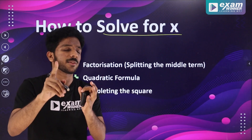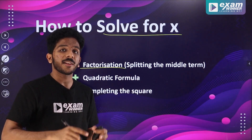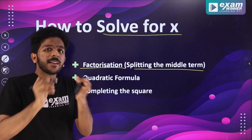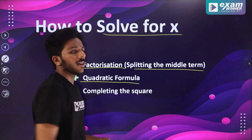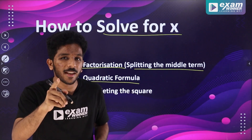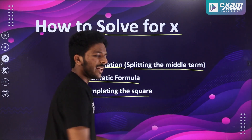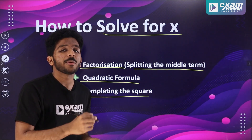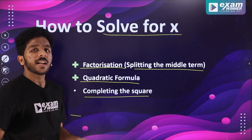What methods are we going to do? Methods are factorization — that is splitting the middle term. The second method is the quadratic formula: x is equal to minus b plus or minus root of b squared minus 4ac. And completing the square: b divided by 2a, whole square, added to both sides.